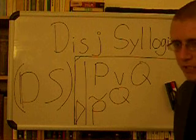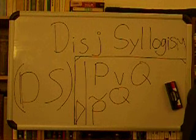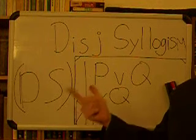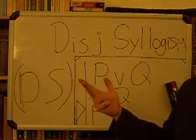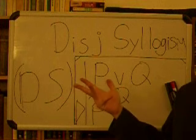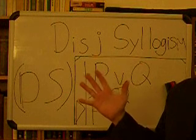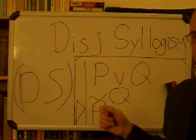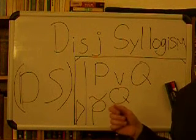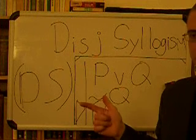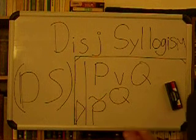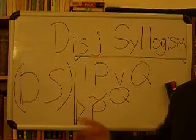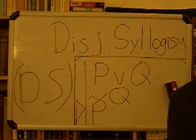That's the end of the derivation rules of SD+. If you go through the other rules, we've got ampersand, conditional, tilde, disjunctive, and biconditional — five rules plus reiteration. And in SD+, we only add three more rules: modus tollens, hypothetical syllogism, and disjunctive syllogism. And those allow us to do away with some of the big, long, tedious things that we do with the other five rules.